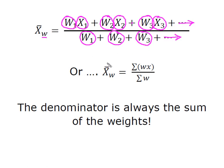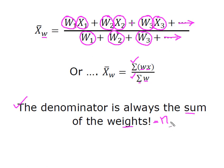We can also look at it in this shortcut formula that says x-bar sub w is simply the sum of all the weights times all of the values, divided by the sum of the weights. Remember, if my students make a mistake, it's with this denominator. The denominator is always the sum of the weights. You can also think of this as being your n — it's the number of observations you have in your data.